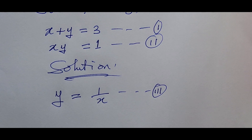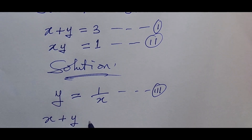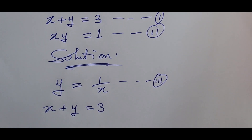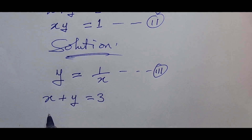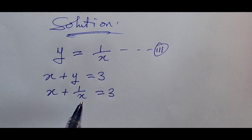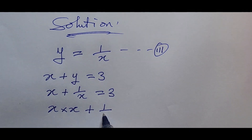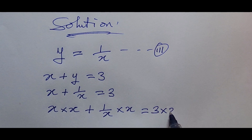We want to put equation three into equation one. Putting equation three into equation one — we have x plus y equals three, so wherever we see y we put in one over x. This gives us x plus one over x equals three. We can eliminate this denominator by multiplying through by x, giving us x times x plus one over x times x equals three times x.